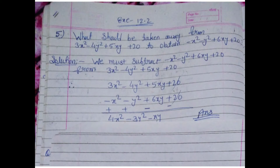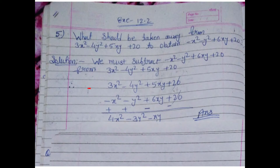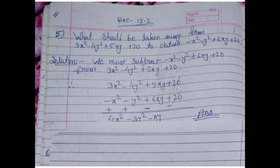x squared and x squared are in the same position. So first, arrange the equations with the same variables aligned in the same column. Write the first equation as it is, then the second equation: minus x squared, minus y squared, plus 6xy, and plus 20. Then we will subtract — we need to change all the signs of the second equation.